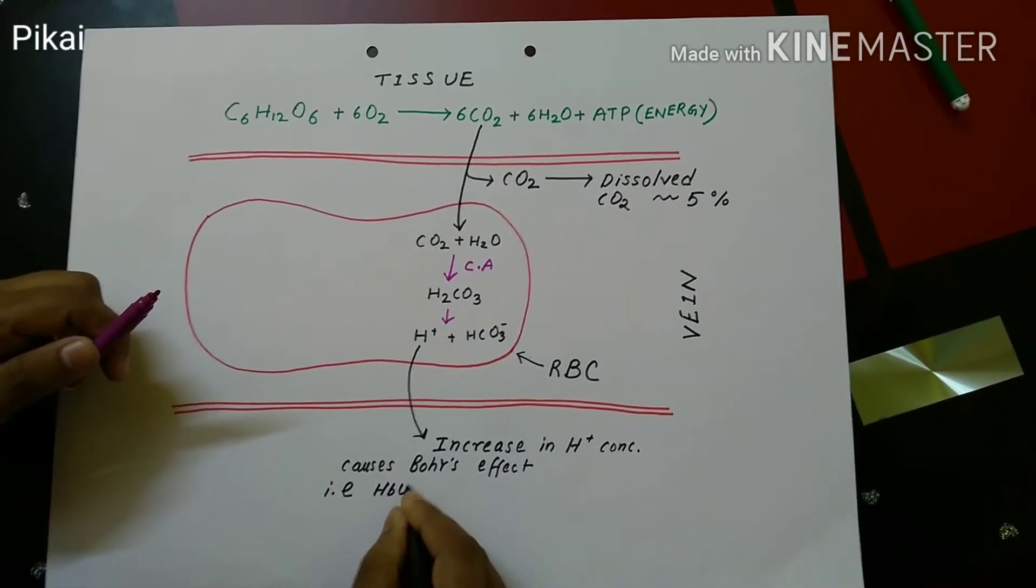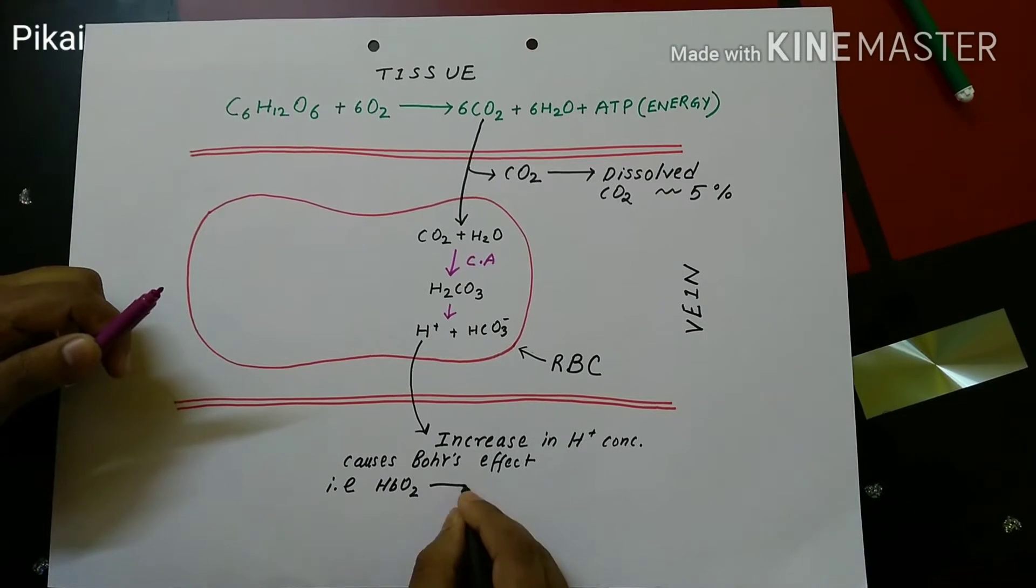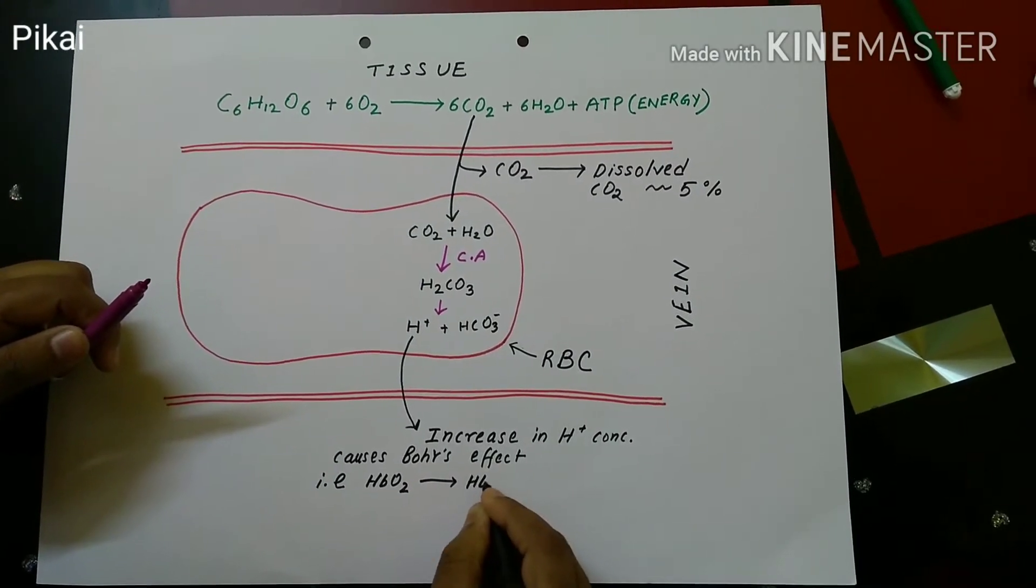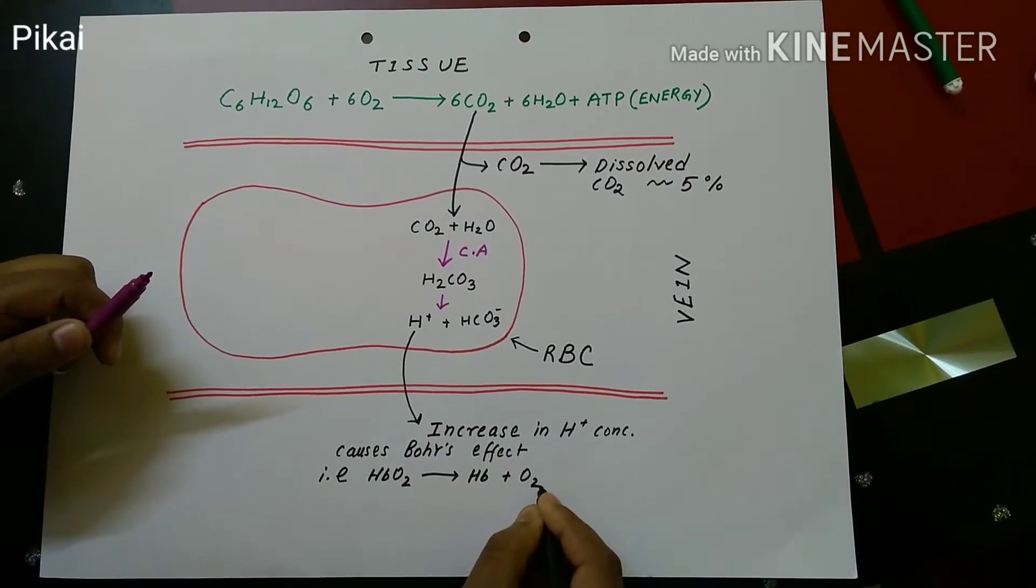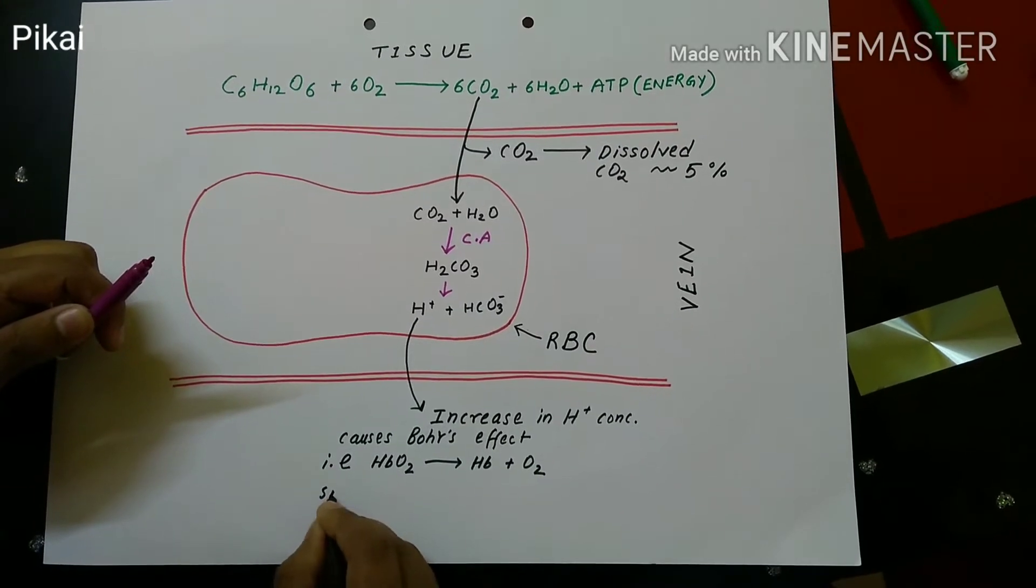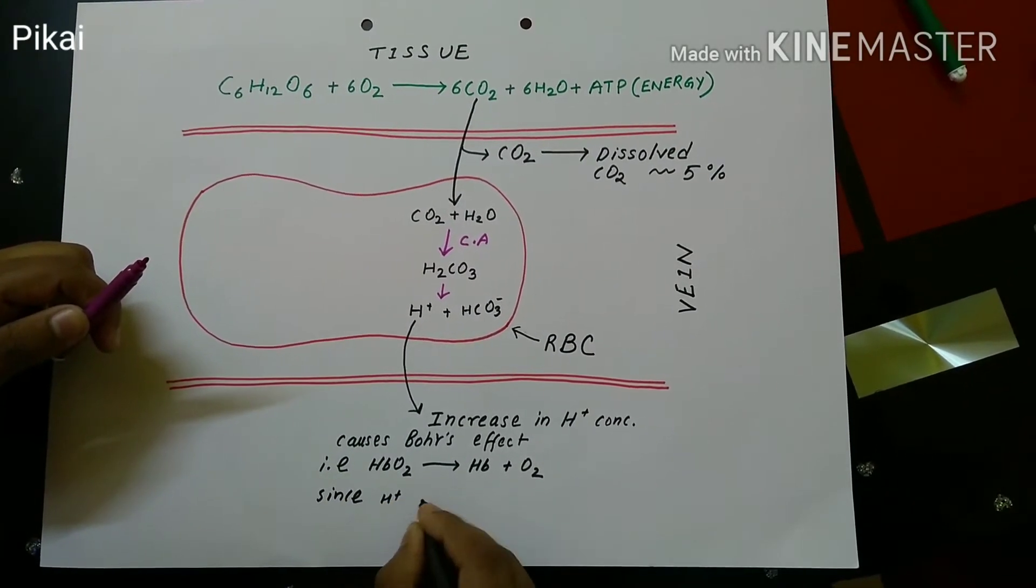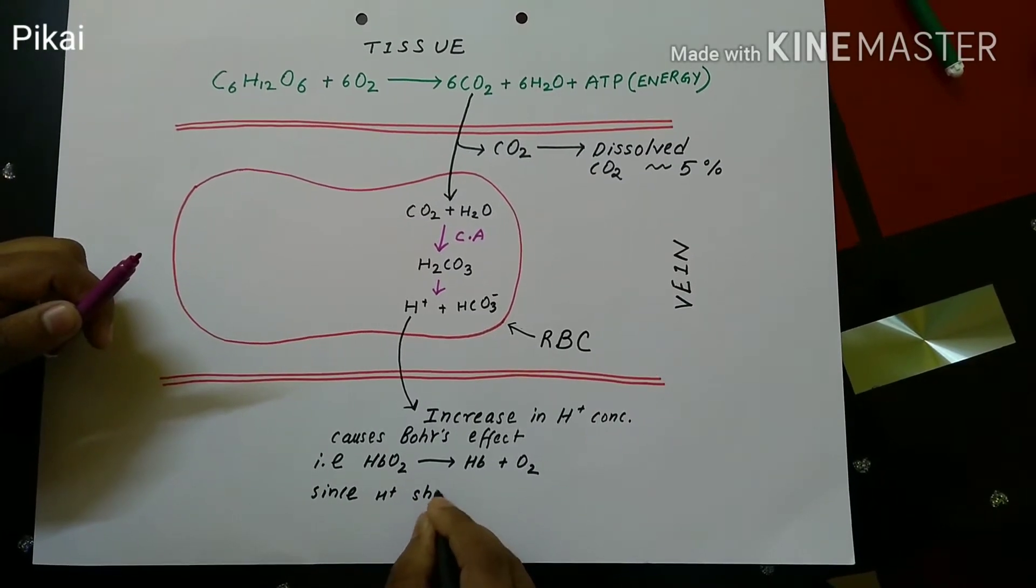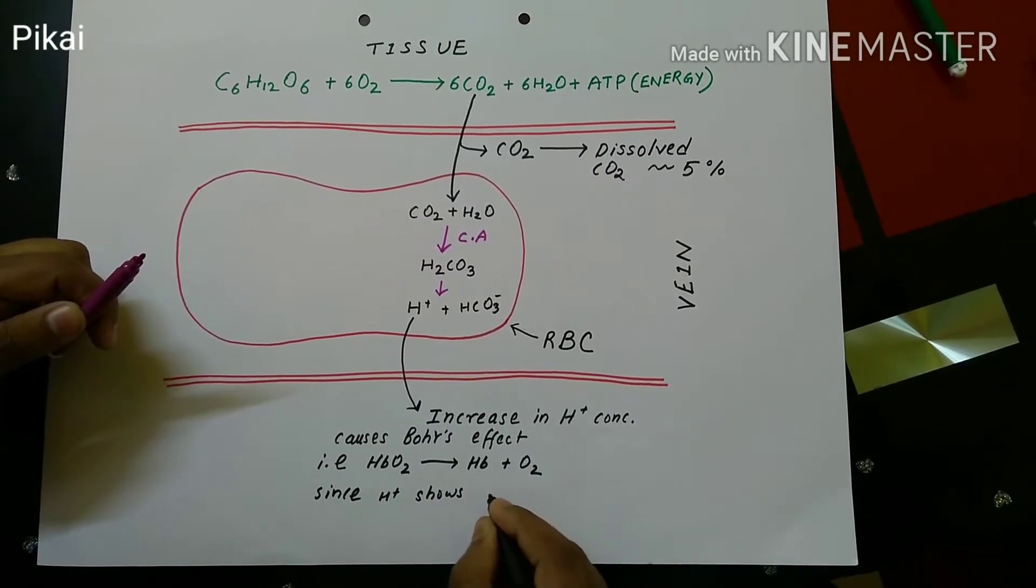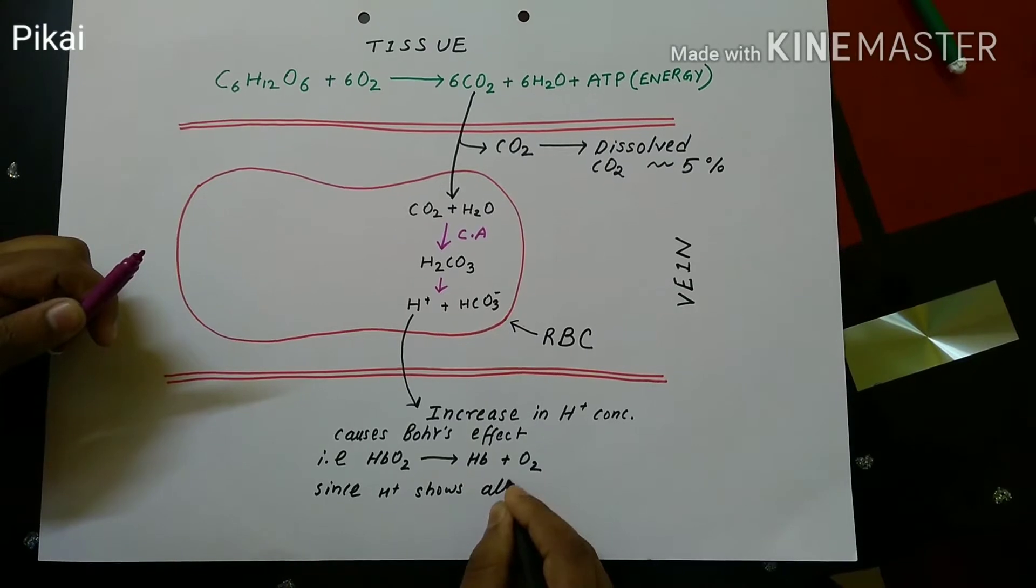So this H+ induces the breakdown of oxyhemoglobin which leads to the formation of Hb and O2 separately. Meanwhile what happens is that the HCO3- concentration increases inside the RBC and this